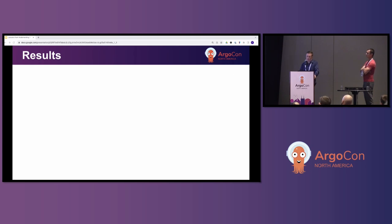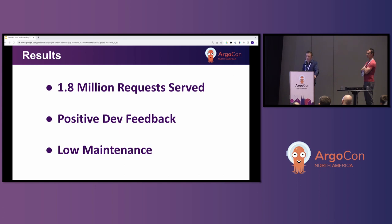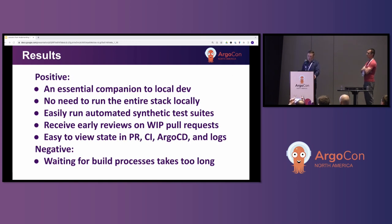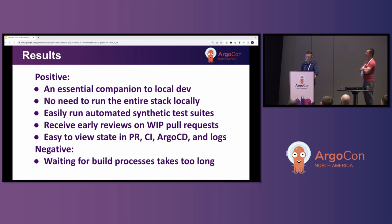Now for the results — was this a valuable effort and how has it impacted our team? So far we've served over 1.8 million requests, and our metrics show that over half of the apps we generate are used by our team for testing and validation. We've received very positive feedback from our devs and have only spent a few hours maintaining these over the past six months. Our developers have found preview apps to be an essential and time-saving part of their workflow — they help de-risk big changes since synthetic testing and PR reviews can start early in a production-like environment. Our primary complaint is build time, and we're currently working with our teams to improve those build times and looking into hot reloading as an option.